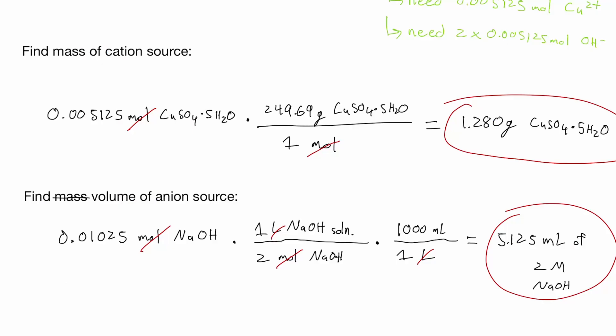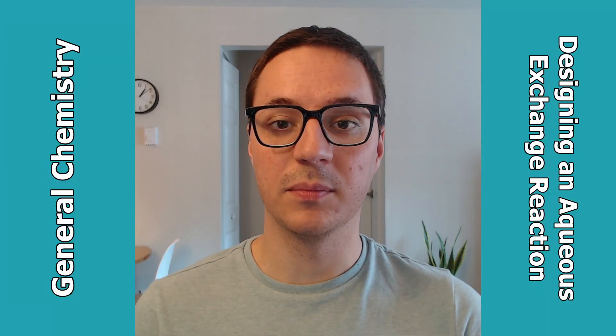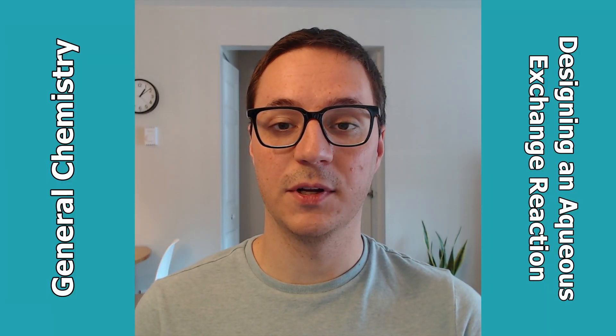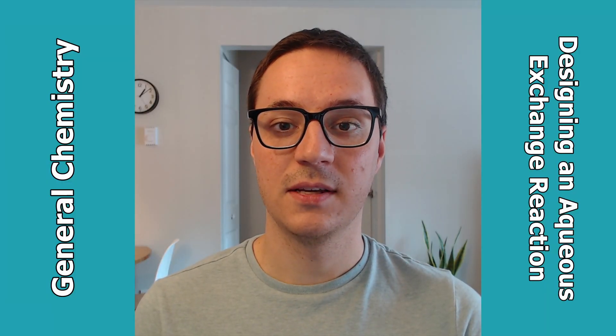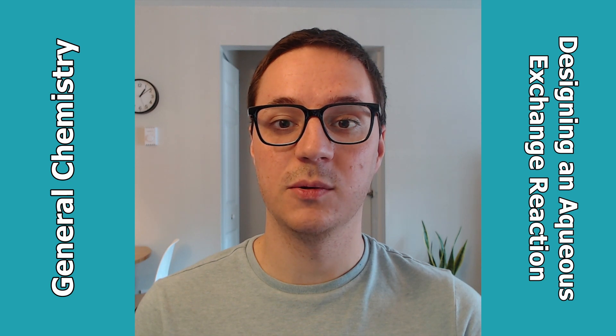Combining these two amounts of each ion source should get us the correct mass of our target compound. You should be able to complete this calculation ahead of time for your assigned compound and mass, so that you can begin working as soon as you arrive to class.